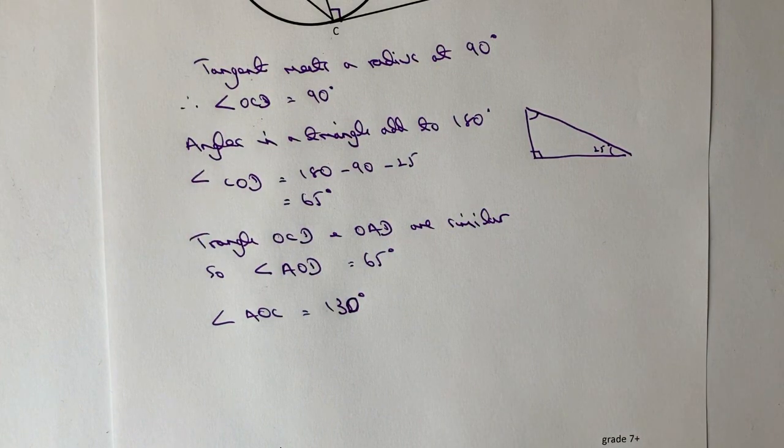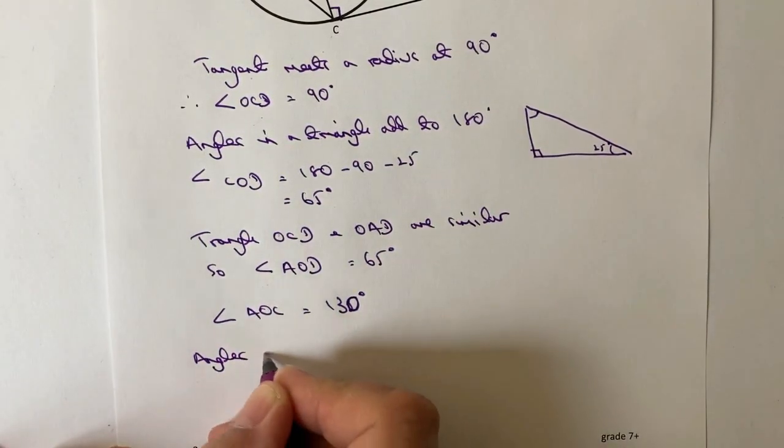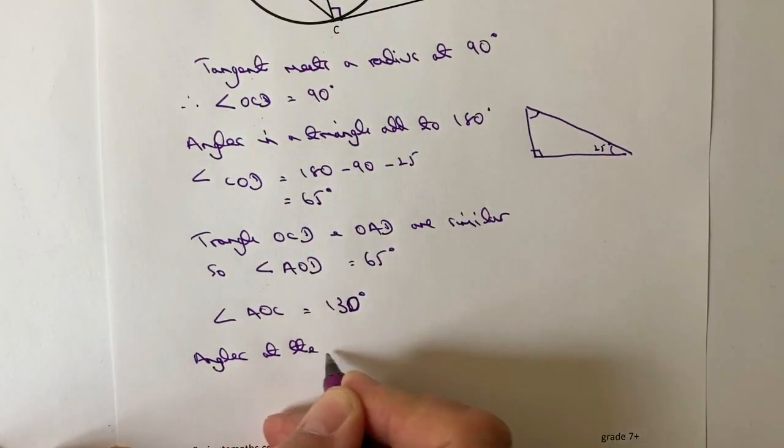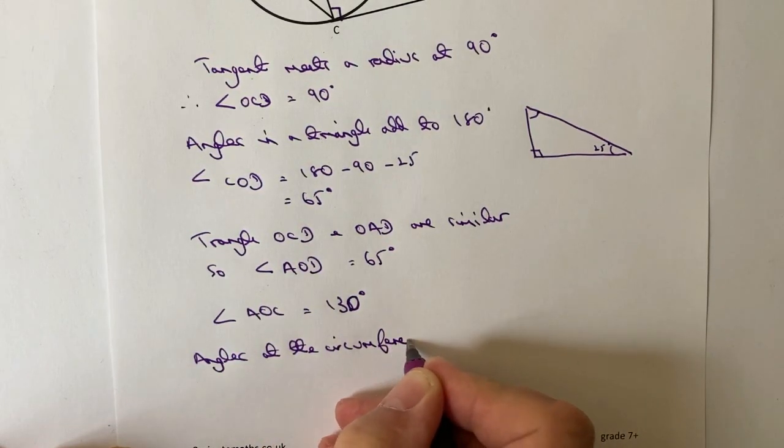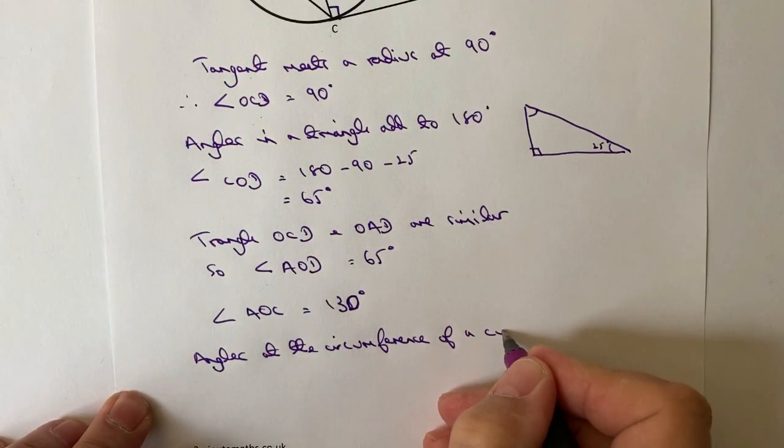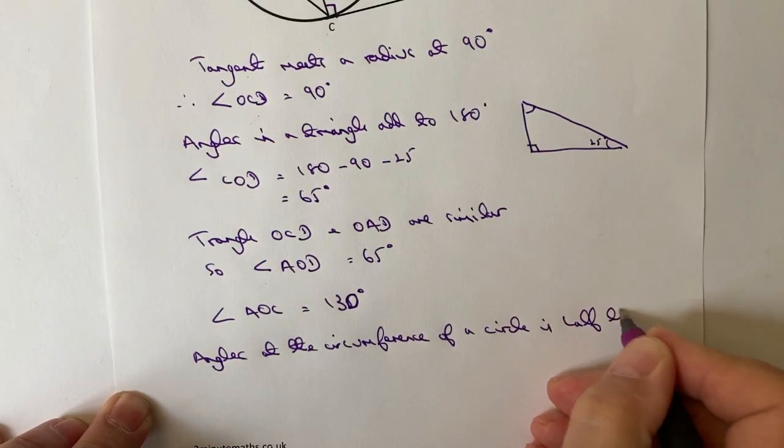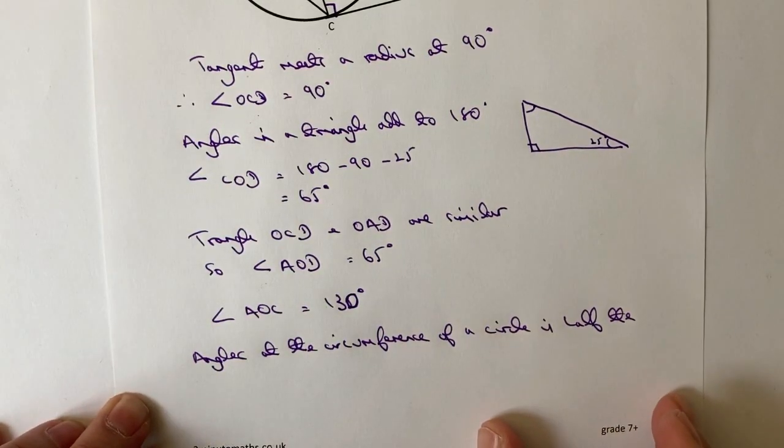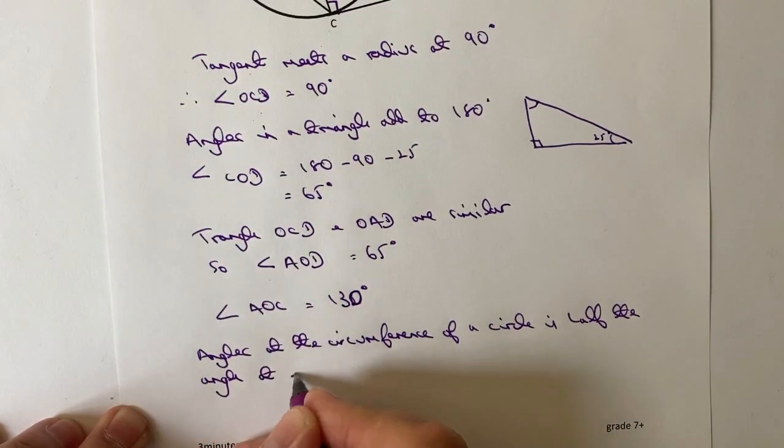Okay, now the final piece of the jigsaw is the angles at the circumference of a circle is or are half the angle at the center.